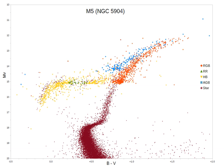Stars on the horizontal branch all have very similar core masses following the helium flash. This means that they have very similar luminosities, and on a Hertzsprung-Russell diagram plotted by visual magnitude the branch is horizontal. The size and temperature of an HB star depends on the mass of the hydrogen envelope remaining around the helium core. Stars with larger hydrogen envelopes are cooler, creating the spread of stars along the horizontal branch at constant luminosity.